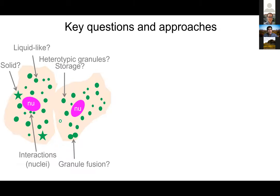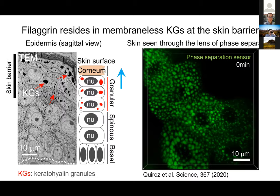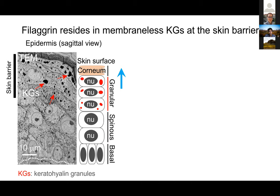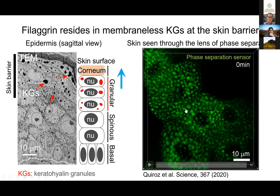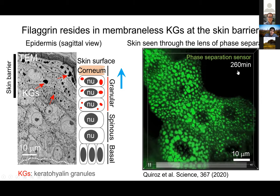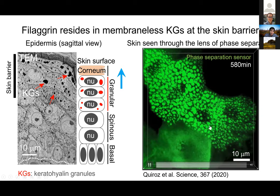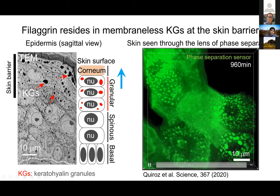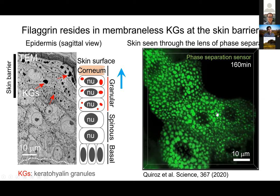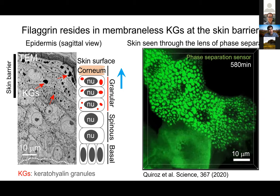Could you repeat the video? I'm not sure it ran — could you point to what the granules are — these green balls? Yes. So the phase separation sensor is localized into keratohyalin granules — this is an image from the top down through confocal microscopy. What you'll see is that over the span of about half a day, we see tremendous remodeling of those structures within the cell as the granular cells transition to the corneum. We see how these green granules smear out.